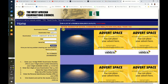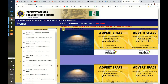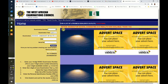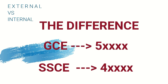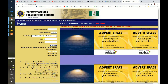External candidates — that is, private students — usually start with five: maybe five zero, five one, or five two. Maybe in the future it will be five three and so on. But once you see five, you know that is for external or private candidates.